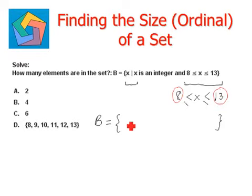So let's write down the elements: 8, 9, 10, 11, 12, and 13. So we have 1, 2, 3, 4, 5, 6. Six elements in the set B.